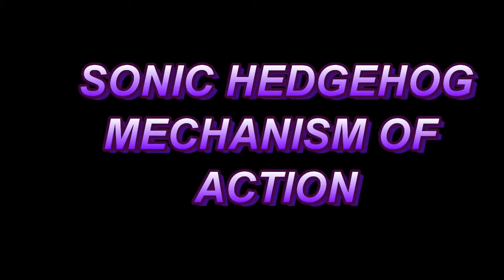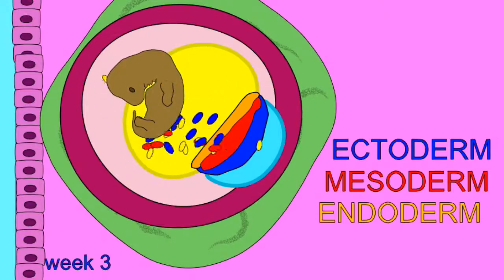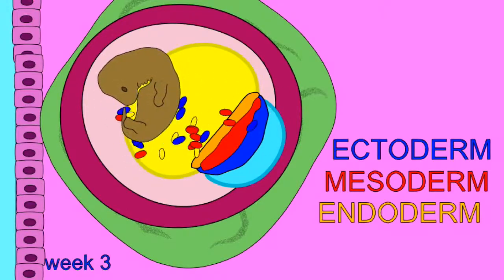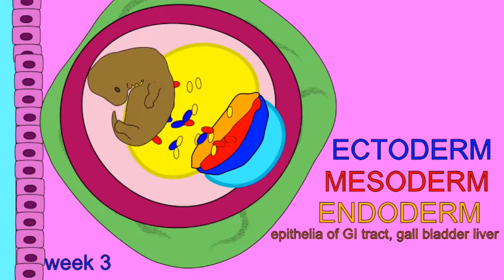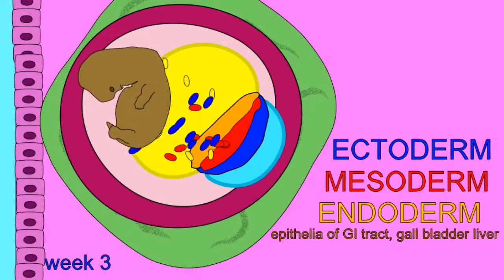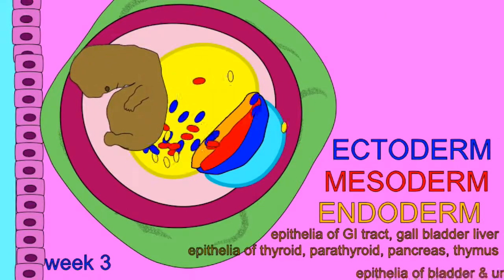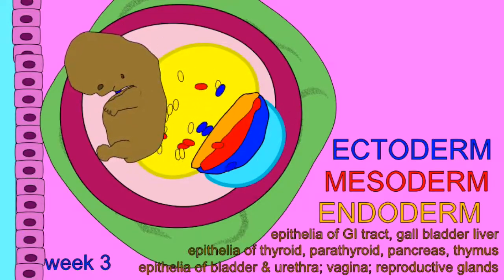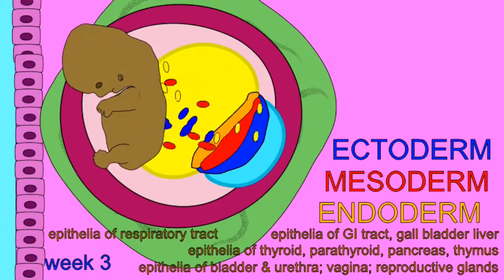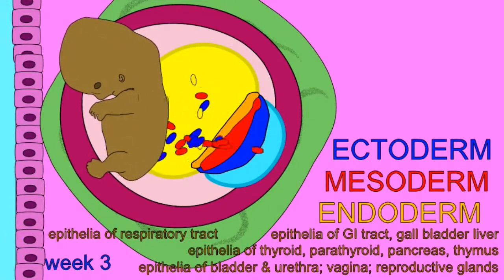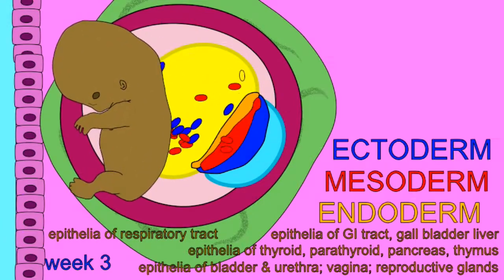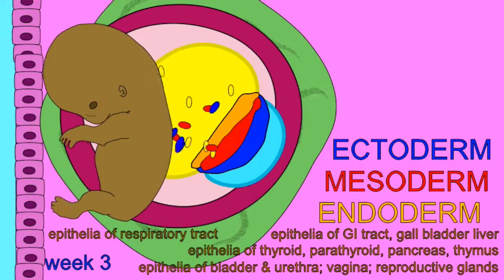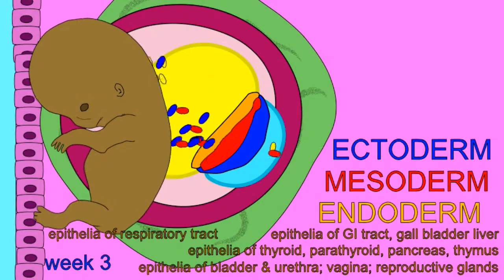The cells of an embryo possess all the genes they would need to become a brain cell, a liver cell, a bone cell, or a muscle cell. Herein lies the problem: how do they know which genes they should turn on as they differentiate, as they specialize, and choose a cell fate?